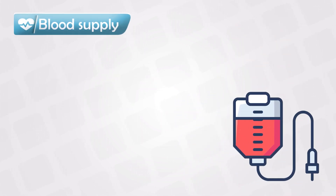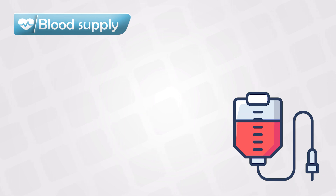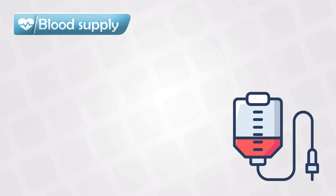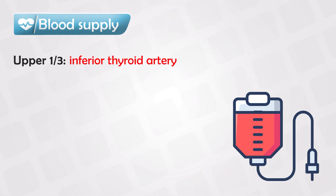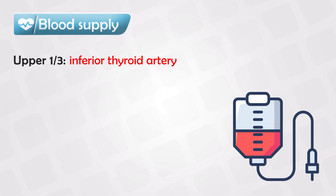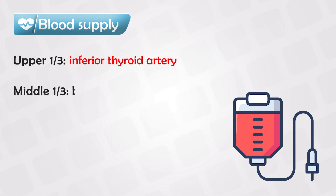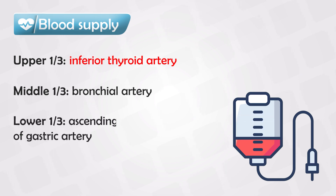When it comes to the blood supply of the esophagus, we divide it into three parts: the upper one-third, the middle, and the lower one-third. The upper part is supplied by the inferior thyroid artery — this is very important to know, because it is often tested in the exam and people often get it wrong. The middle part is supplied by the bronchial artery, and the lower part is supplied by the ascending branch of the gastric artery.